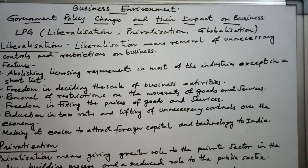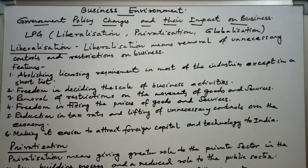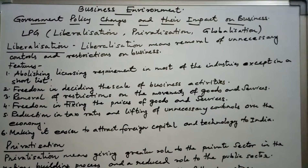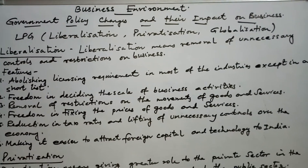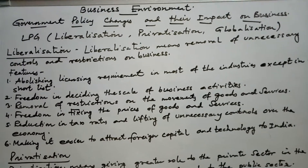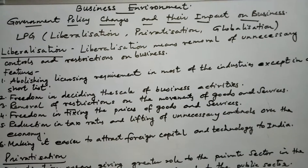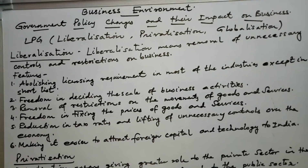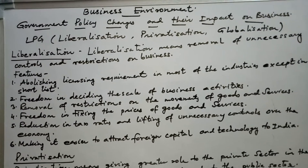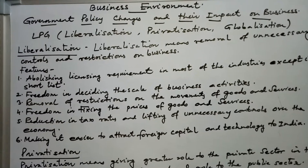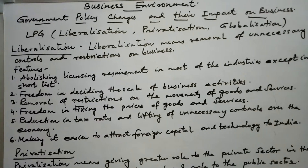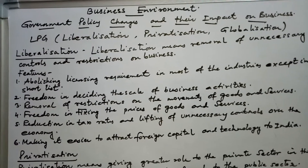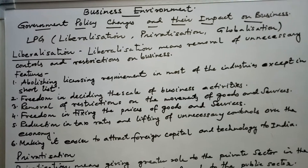In this video we are going to discuss government policy changes and their impact on business. This is Business Environment, Plus Two Business Studies. In 1991, the Indian economy faced a serious foreign exchange crisis, high government deficit, and a rising trend of prices despite increased crop production. As part of economic reforms, the Indian government announced a new industrial policy in July 1991. The main aim was to create a more competitive environment in the economy and to remove barriers to entry and growth of firms.